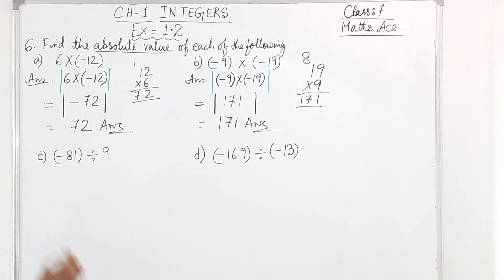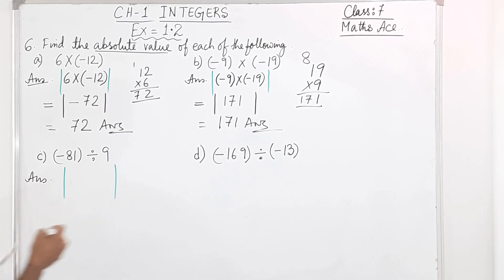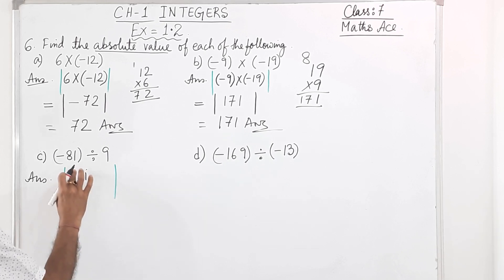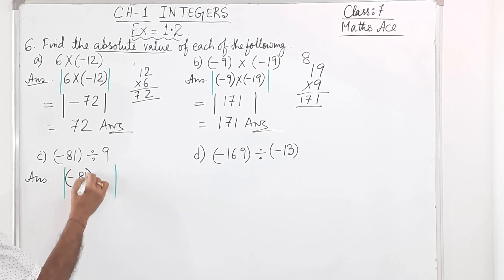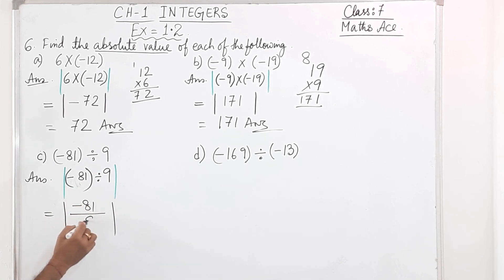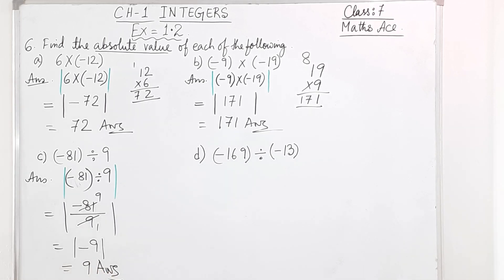Part C: absolute value of minus 81 divided by 9. First put the absolute symbol, then write minus 81 over 9 inside. Cut: 9 into 81 is 9 — so you get minus 9 inside the absolute value. Coming out it becomes positive only, so the answer is 9.